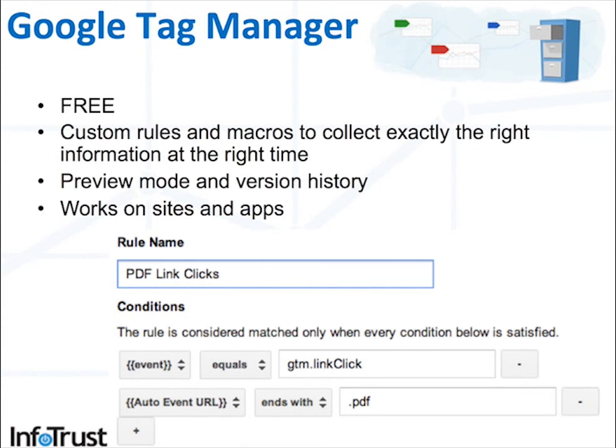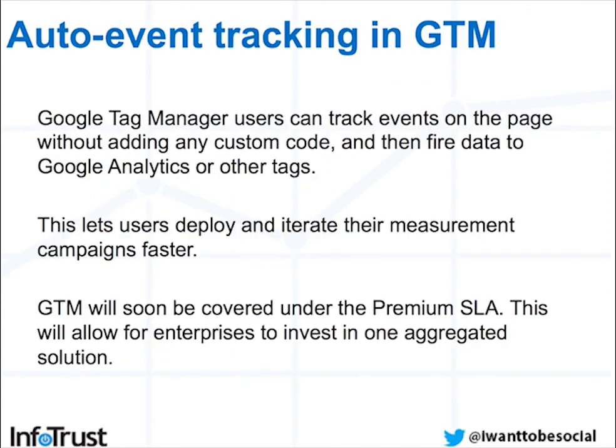Google Tag Manager, as a little background, is a free tag management system provided by Google where you can create custom rules and macros to identify the events and elements on your site that you want to track, and set up that tracking completely from the interface, not touching the source code of your site at all.